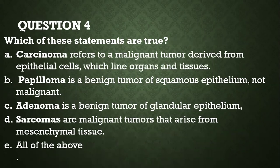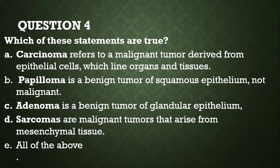Question number four: which of the statements are true? A — carcinoma refers to a malignant tumor derived from epithelial cells which line organs and tissue. B — papilloma is a benign tumor of squamous epithelium, not malignant. C — adenoma is a benign tumor of glandular epithelium. D — sarcomas are malignant tumors that arise from mesenchymal tissue. The answer is E — all of the above.